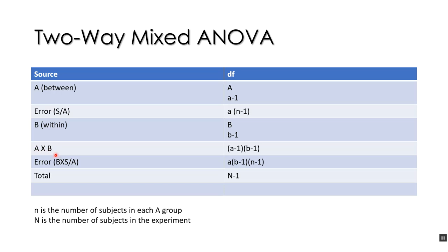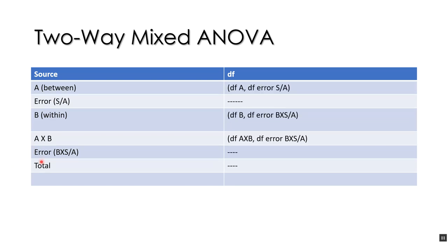You have the interaction A by B — the interaction of the between-subjects and within-subjects factors — which seems pretty normal. But what's different is you have two error terms, because you have to calculate your F values with different error terms for the between-subjects and within-subjects factors.